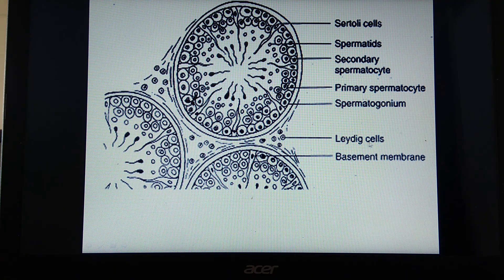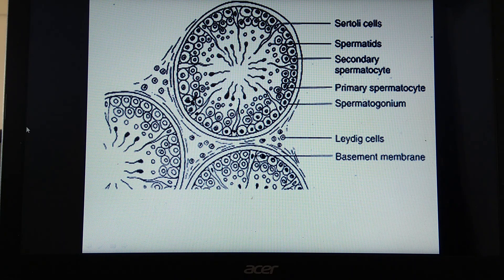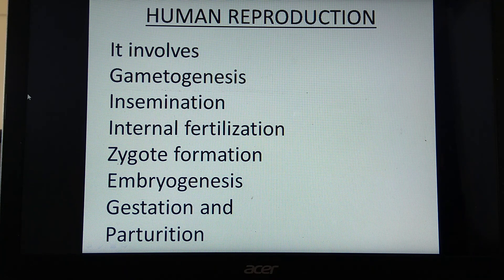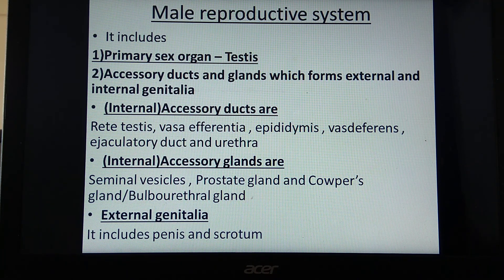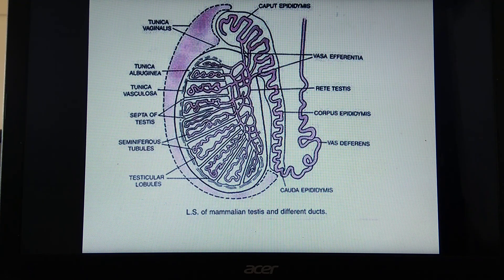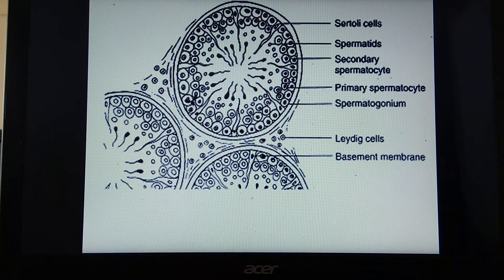In the TS of testes, you have to explain the seminiferous tubule with germinal epithelial cells undergoing spermatogenesis through the stages of primary spermatocyte, secondary spermatocyte, spermatids, and Sertoli cells, along with Leydig cells secreting testosterone stimulated by ICSH of the anterior pituitary. Today we studied male reproductive system under human reproduction, covering primary sex organ, accessory ducts, glands, external genitalia, longitudinal section, and transverse section of testes. Diagrams are important and big questions of four marks can be asked from this part.